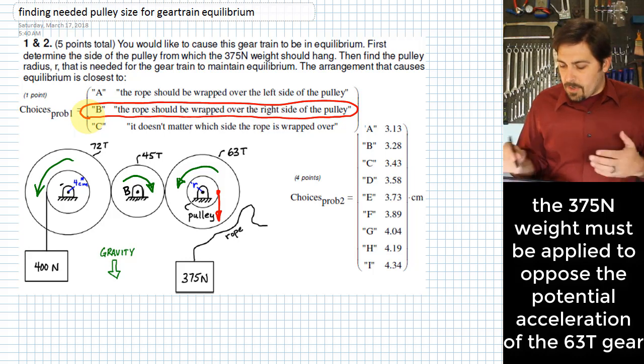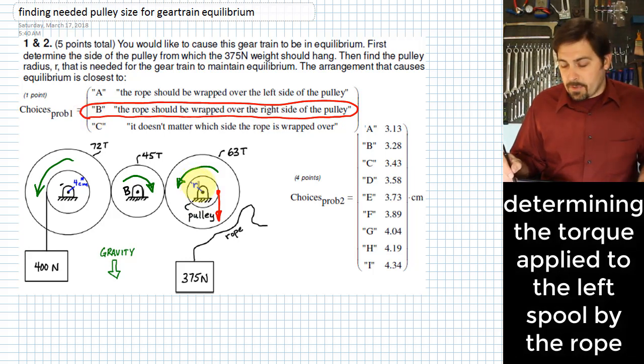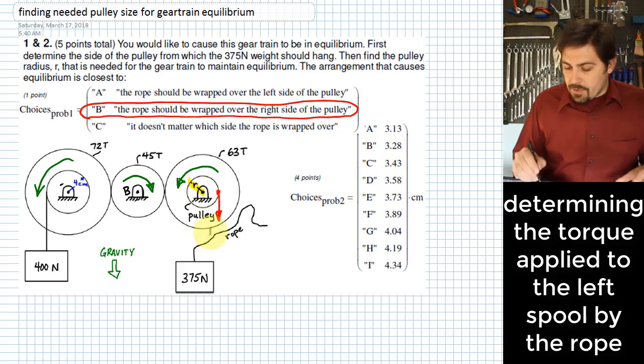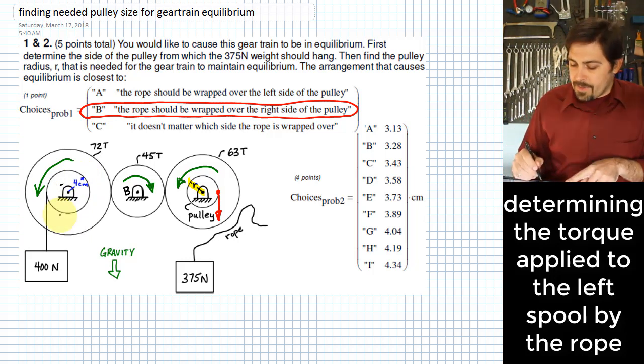So that's the easy part. The next part is we need to figure out the radius that this pulley would need to be, which is right here. To figure out what that radius should be, we're going to first of all start on the end where we know a little bit more and figure out the torque that is applied by the 400N weight hanging on the 4cm radius spool that's over on that left side.